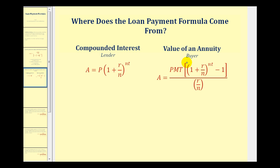And if you were the person taking out the loan, you could use the value of an annuity formula, where P is replaced with PMT for payment, to represent all of the payments that you would make to cover A, your loan amount, plus all of the interest you'd also be charged.